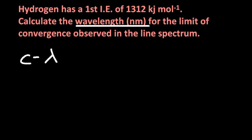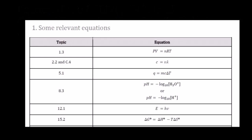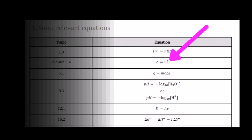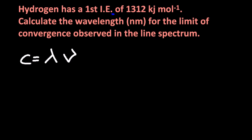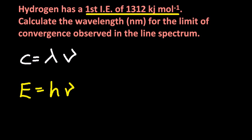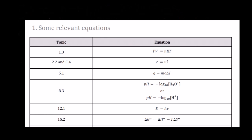Wavelength is represented by lambda — that upside-down Y symbol. You'd find the equation containing lambda in table 1 of the data booklet. Since the question mentions ionization energy, look for energy in the equations: E equals h-nu, where that curly V is pronounced nu and means frequency. That equation is also in table 1.